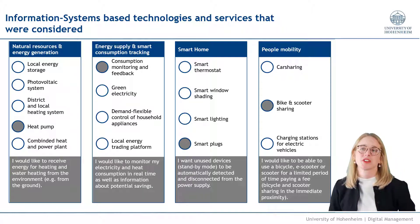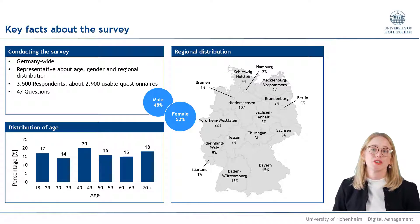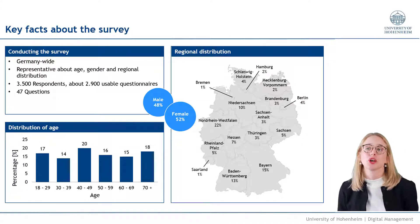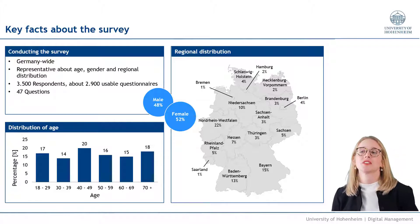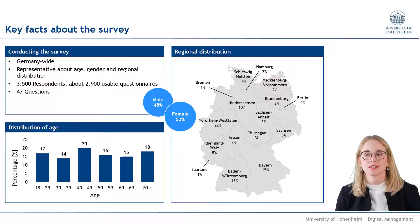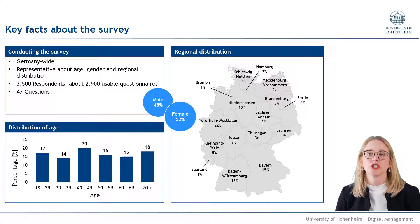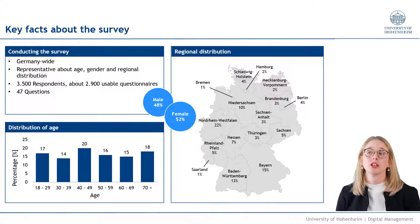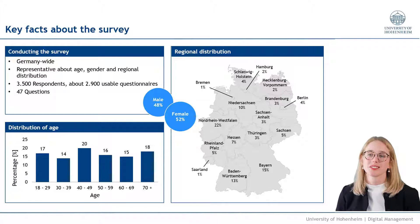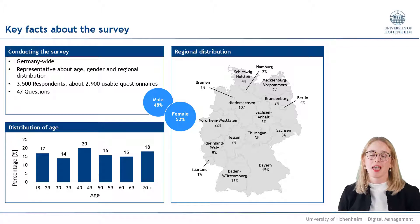Here are some key facts about our survey and participants. We surveyed participants from all of Germany. In total, our survey comprised 2,930 German citizens. We had 52% female participants and the average age was about 49 years. The respondents' distribution was representative for the German population in terms of gender, age and region, meaning the federal state of residence. To answer our three research questions, we conducted three separate analyses of the data collected.